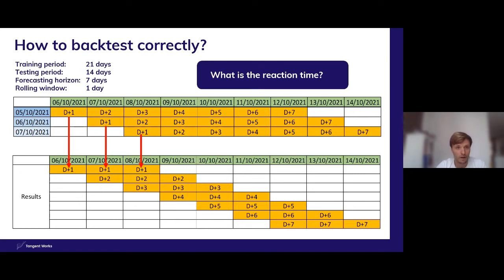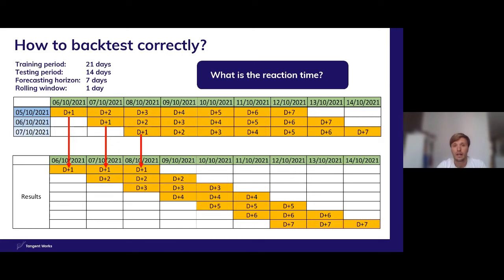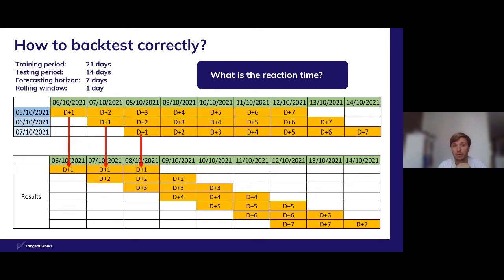Looking at the resulting tables: on the 5th of October, in blue at the top left, we generate a seven-day ahead forecast for the dates indicated in green. The next day we repeat that exercise, shifting one day forward, and on the 7th of October we repeat again. For each exercise we create values of D+1 quality, D+2 quality, and so on until D+7. It's important to distinguish between these qualities because looking further ahead is harder — there's a lot more uncertainty — so rather than calculating accuracy over the overall forecasting horizon, make a distinction between each step ahead.